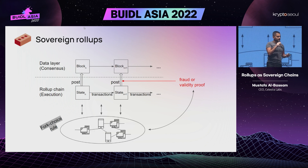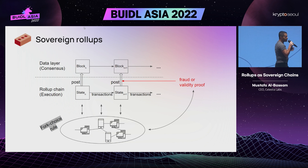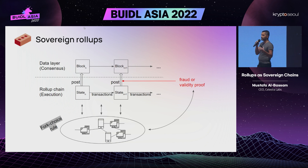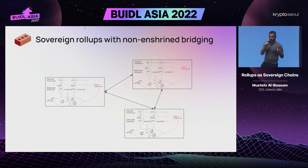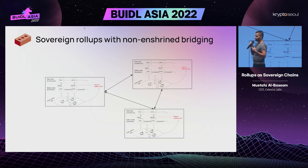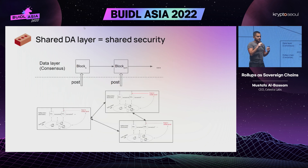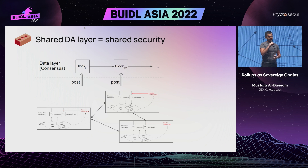In many Ethereum rollups, the social contract among the community is that the correct or canonical chain is defined by this on-chain light client smart contract. But in a sovereign rollup, instead of having the community coalesce around an on-chain light client, the community could decide that this is an independent chain and run a light client directly to interpret the data for that rollup and decide what the correct rollup chain is. You can still have bridging between sovereign rollups — it's just that you're not enshrining a canonical two-way bridge, and that expands the design space for bridging. You can also have trust-minimized bridging if those rollups share the same data availability layer.